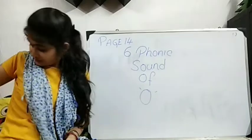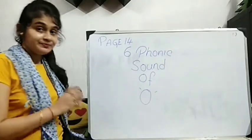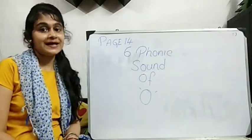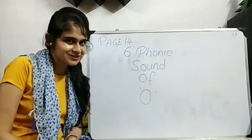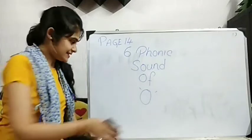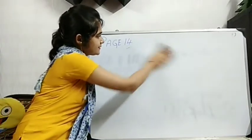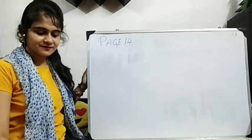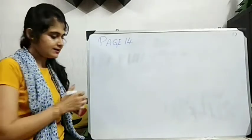So what we will do? We will do the related words with this sound O. And we will see some pictures. Are you ready? Let's start. Now, see the first picture. What is the name of this picture? Can you see?